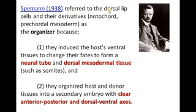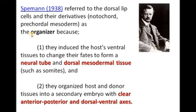Spemann referred to the dorsal lip cells and their derivatives — notochord, pre-chordal mesoderm — as an organizer. The notochord area, which is the pre-chordal mesoderm, is called the organizer because it induces the host ventral tissue to change their fates to form a neural tube. The dorsal mesodermal tissue, such as somites, also forms because once the organizer is induced in another embryo, it gives rise to a neural tube and dorsal mesodermal tissue.